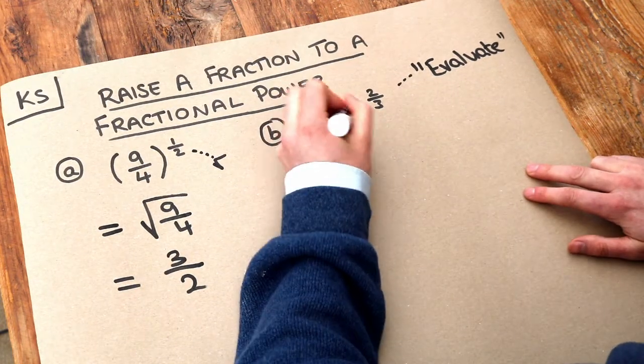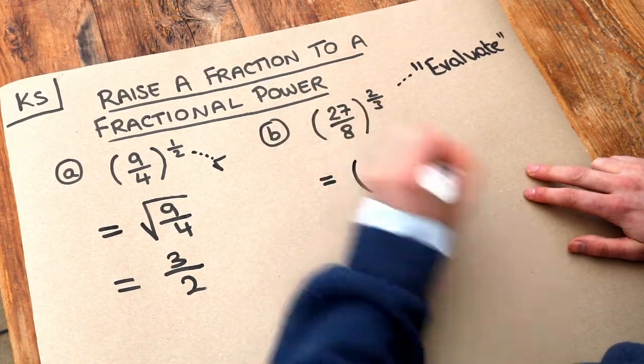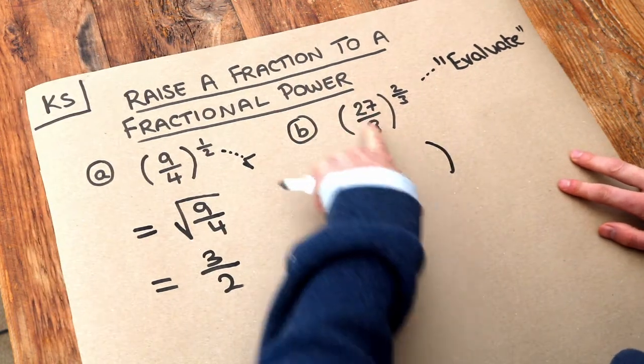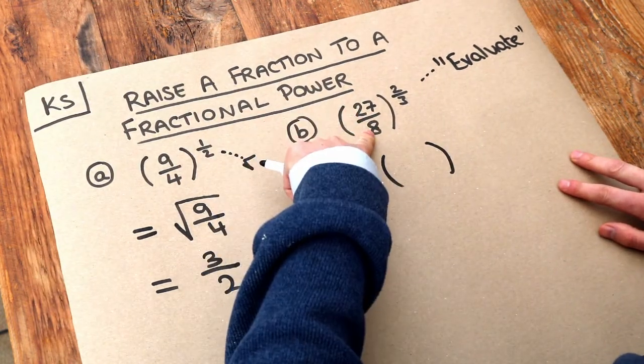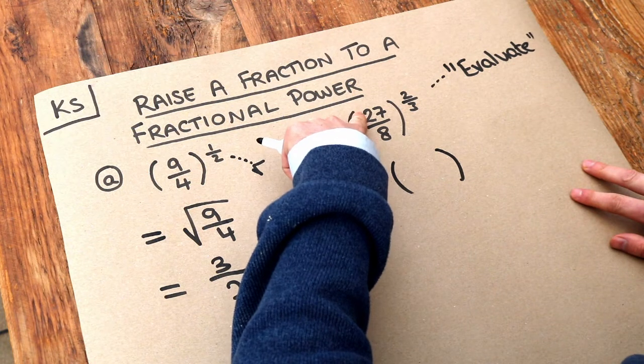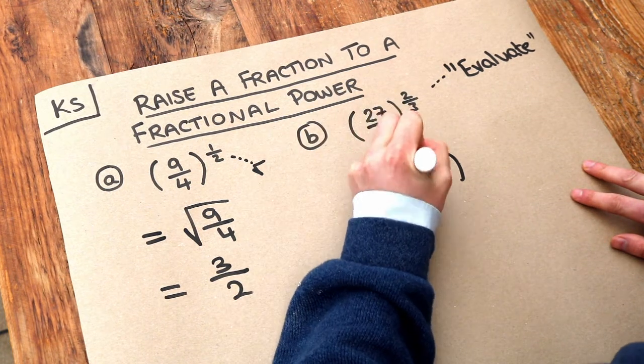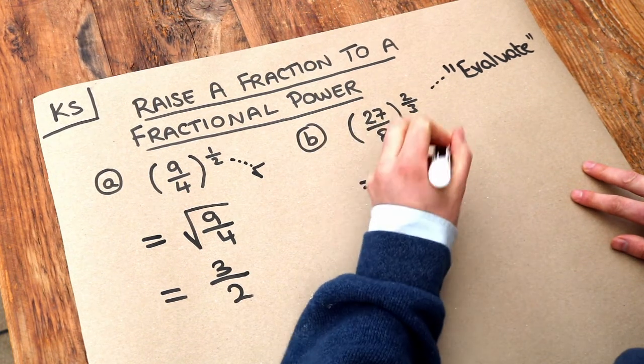So we're going to cube root this fraction first. What's the cube root of 27 over 8? Well we cube root the numerator, cube root the denominator. The cube root of 27 is 3, and the cube root of 8 is 2.